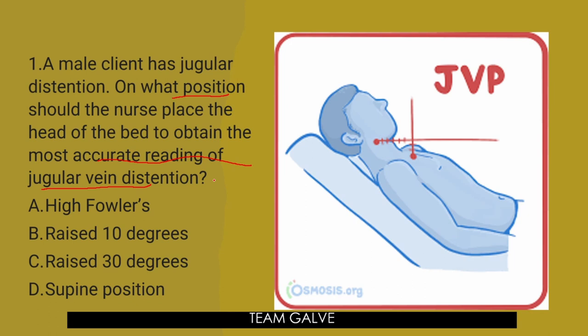The answer is letter C, raised 30 degrees. Jugular venous pressure is measured with a centimeter ruler to obtain the vertical distance between the sternal angle and the point of highest pulsation with the head of the bed inclined between 15 to 30 degrees. Increased pressure can't be seen when the client is supine or when the head of the bed is raised 10 degrees because the point that marks the pressure level is above the jaw — therefore, not visible.